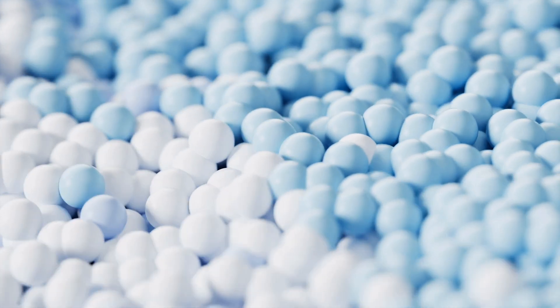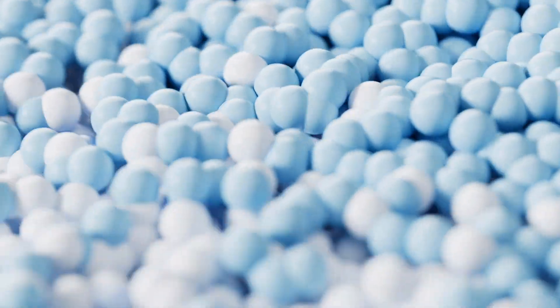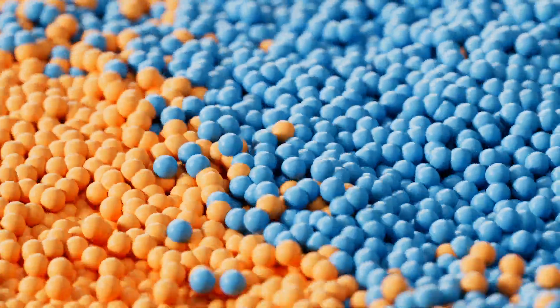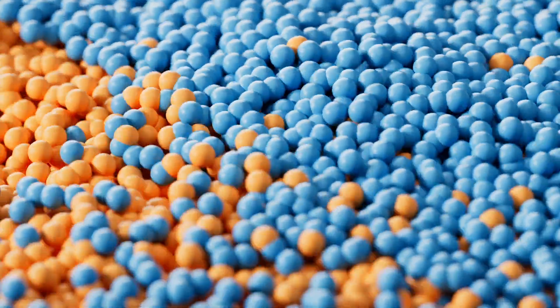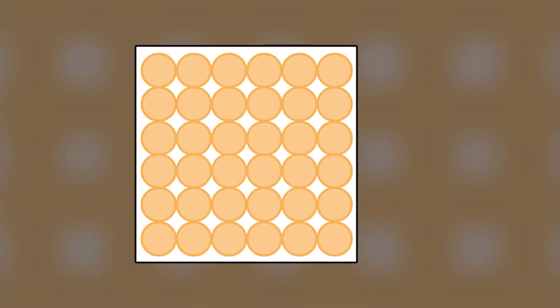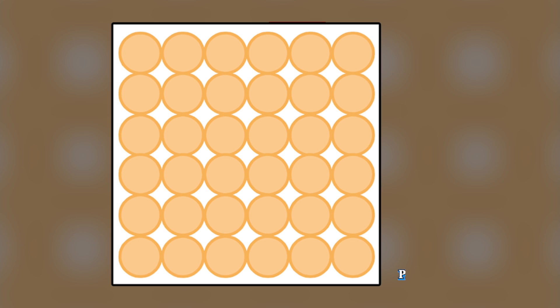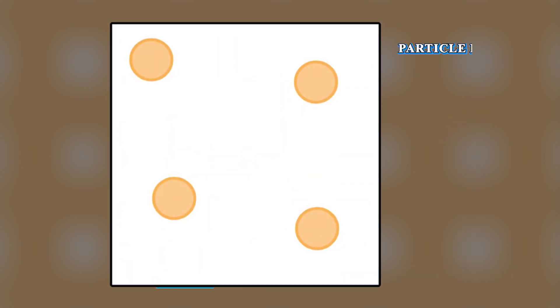Particle density refers to the number of particles in a unit area and is higher in solid objects than in gaseous objects. In simpler terms, when particles are close to each other, the particle density is high, and when they are far apart, the particle density is low.